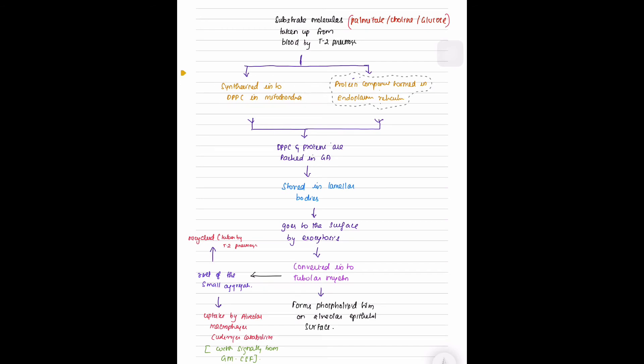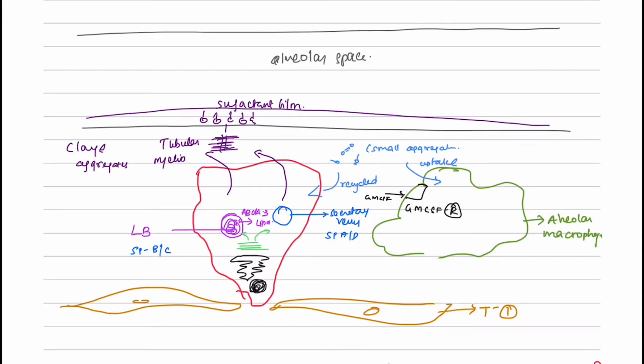The dipalmitoyl phosphatidylcholine and proteins are packed in the Golgi apparatus and stored in lamellar bodies. They go to the surface by exocytosis and are converted into tubular myelin, forming a phospholipid film on the alveolar epithelial surface.